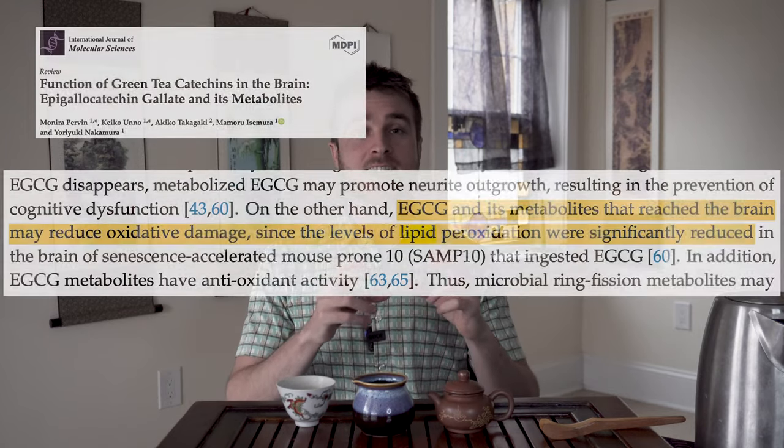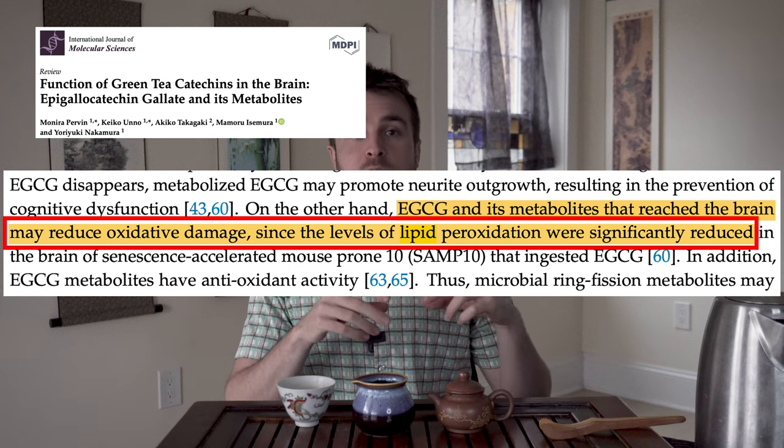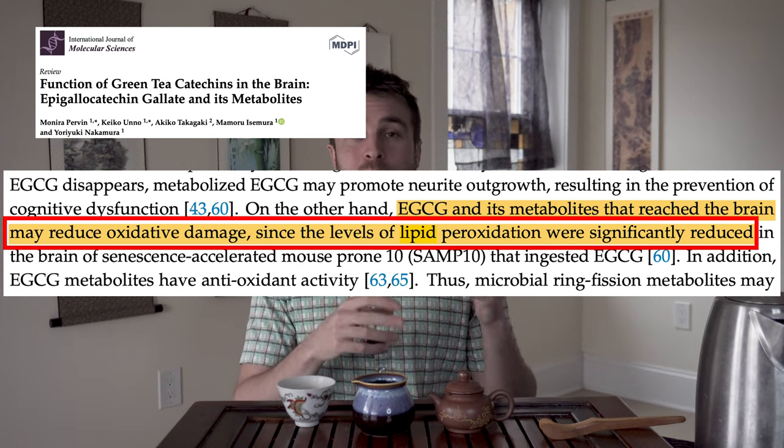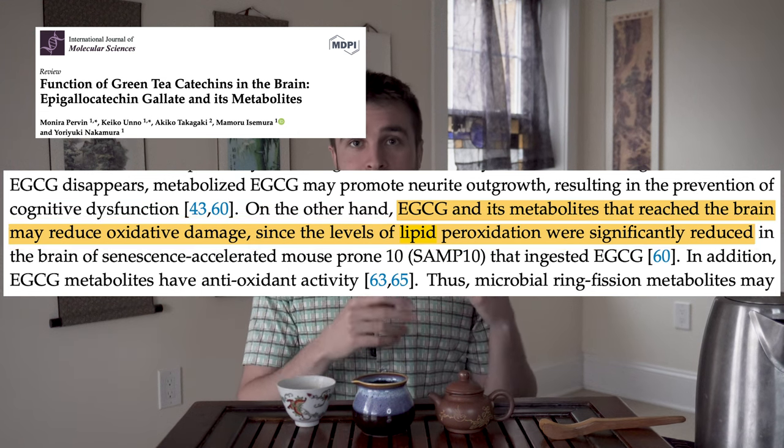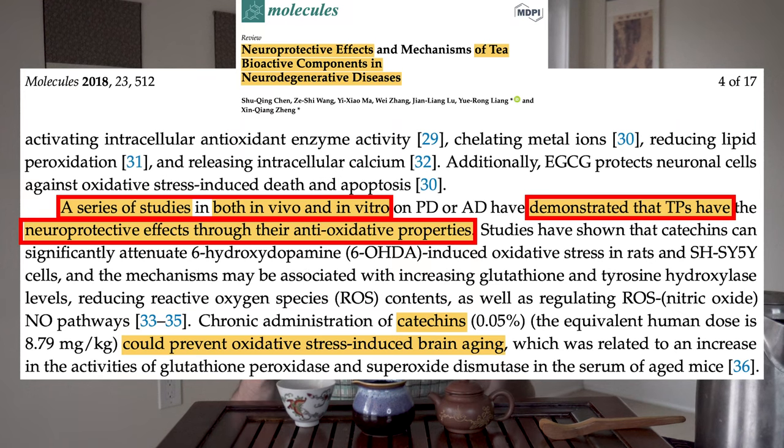Obviously this doesn't say that tea is a cure for these diseases, but it's a very interesting finding that suggests there could be a role for these tea catechins in various brain diseases. We also have experiments in mice that showed when you feed mice EGCG or EGC — two primary tea catechins — there was far less lipid peroxidation in brain tissue. Lipid peroxidation is the main form of oxidative stress in cells, showing that by ingesting these tea catechins orally, they crossed the intestines, then crossed the BBB, and acted as an antioxidant within the brain.